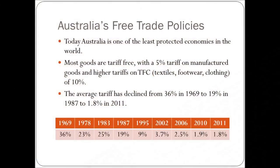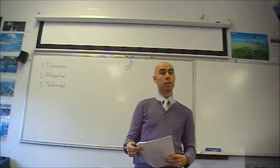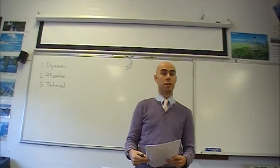So a bit more on Australia's free trade policies. Today, Australia is one of the least protected economies in the world. Most goods are tariff-free. There is a 5% tariff on manufactured goods and high tariffs on TFC. TFC, you might hear about, is textiles, footwear, and clothing. They have tariffs of about 10%. The car industry also used to have tariffs that were above that 5% figure.